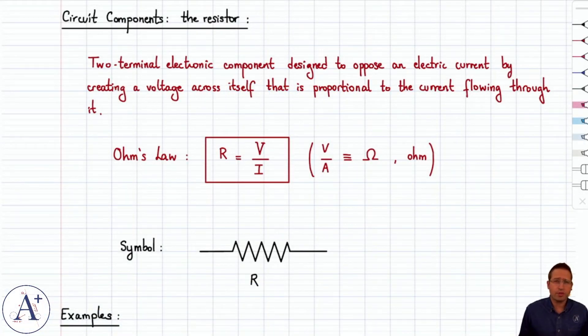Let's introduce our first circuit component, the resistor. It's a two-terminal electronic component designed to oppose an electric current by creating a voltage across itself that is proportional to the current flowing through it.